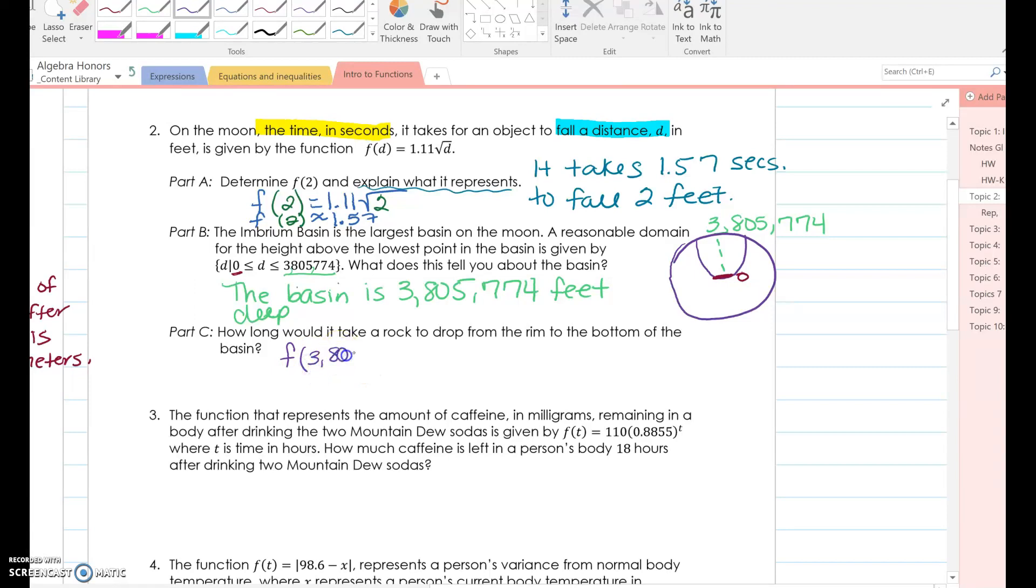Okay. So when you go to plug this into your calculator, yes, you are going to put 3,805,774. All righty. Then you hit the square root button. Do not erase it. Leave that crazy number that shows up in your calculator. Then multiply that by 1 and 11 hundredths. You should get that it is about 2,165 point, I'm going to round to the nearest hundredth, so 0.43 seconds. So it takes that many seconds for it to drop three, over almost 4 million feet. That is crazy.